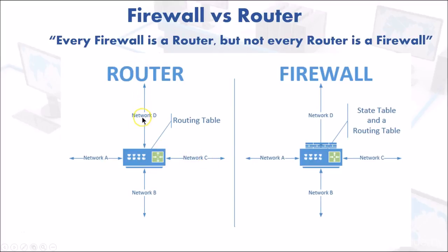Data comes in, lookup, network C. Or data comes in on network B, does a lookup, goes out network A.